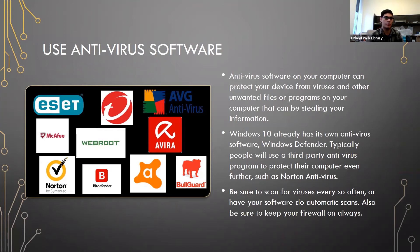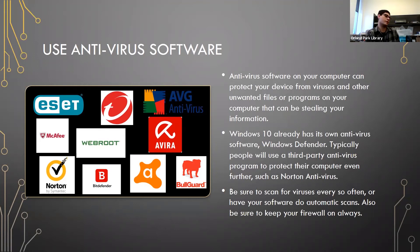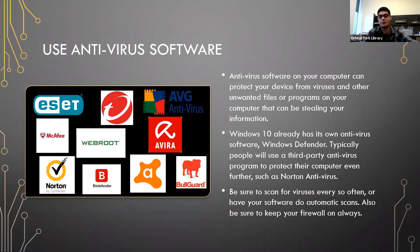Now, antivirus software. There are a lot of names people are familiar with: McAfee, Norton, Bitdefender, AVG — there are many options. Antivirus software protects your devices from viruses and unwanted files and programs that could be stealing your information. If you already have something bad on your computer — malware, a rootkit, ransomware that hasn't kicked in yet — you run an antivirus scan, and your antivirus will say 'Hey, there's a virus — we deleted it for you.' That's it.